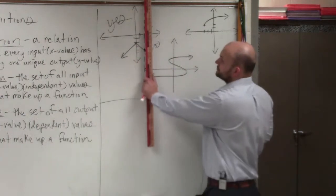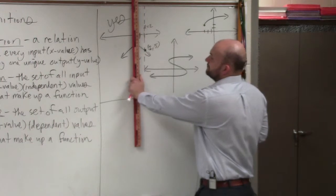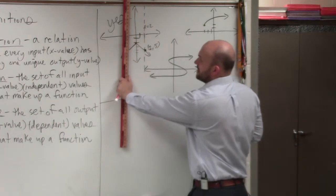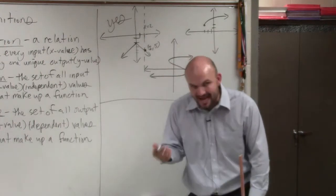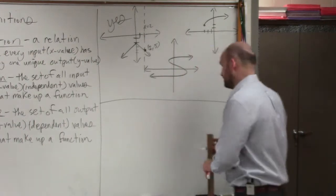Does that make sense? So what you basically can do is just go across and say, okay, my vertical line is not crossing my graph more than once. That means every x value has exactly one output or one y value.